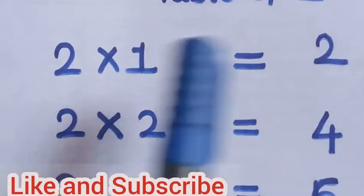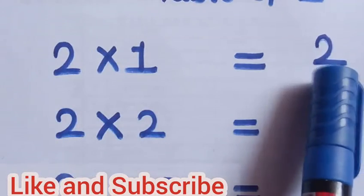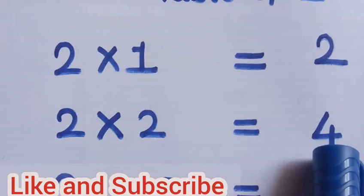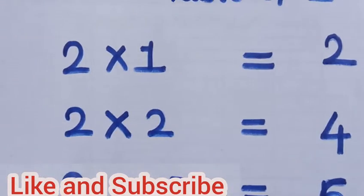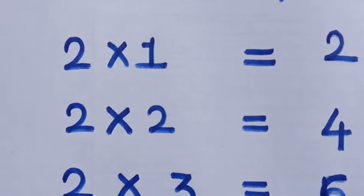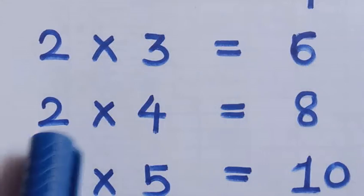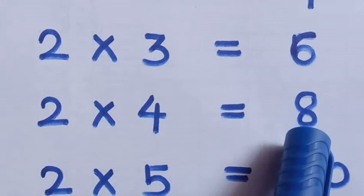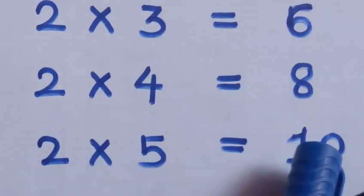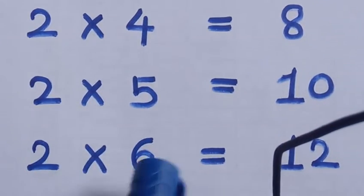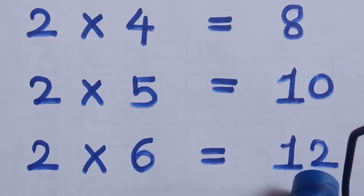Two ones are two. Two twos are four. Two threes are six. Two fours are eight. Two fives are ten. Two sixes are twelve.